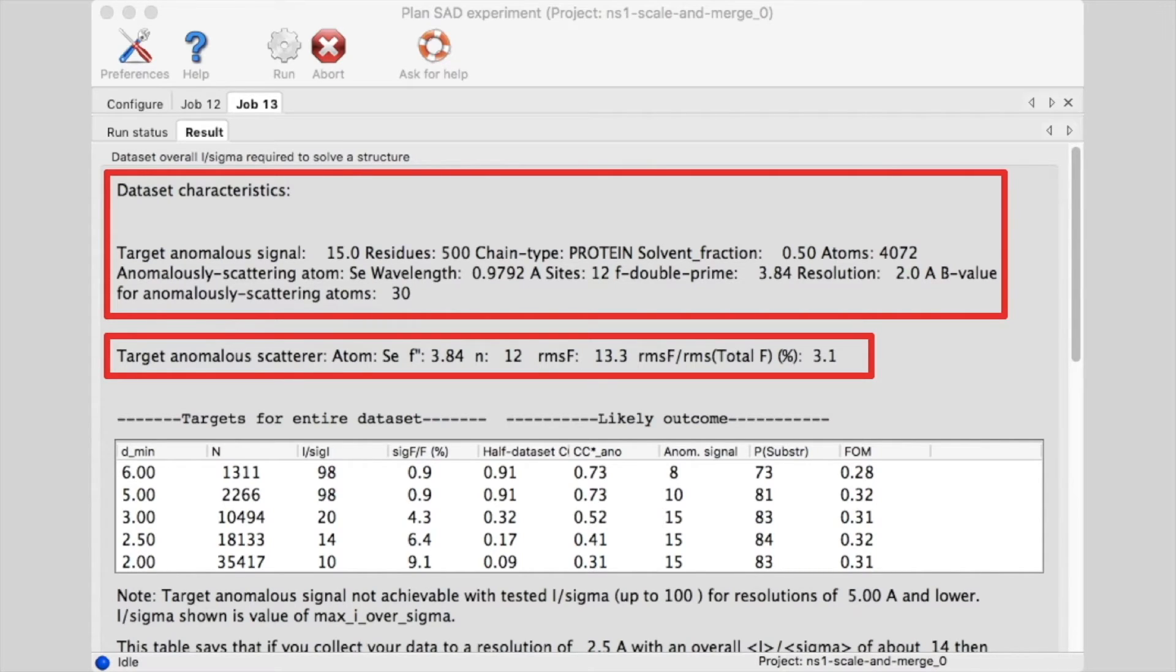The summary then lists, as a function of the high resolution limit, the number of reflections, the I over sigma chosen by the GUI, the resulting half-dataset correlation, and estimated anomalous correlation.